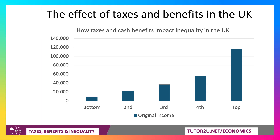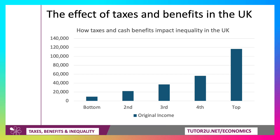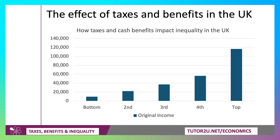Let's have a look. First of all, original income — you can see the scale of the inequality. What we're doing here is taking quintiles, so the bottom quintile is the poorest 20% of households and the top quintile is the richest 20%. You can see the gap, with the third quintile having an original income of just under £40,000 but the top quintile having an original income nearly three times as much.